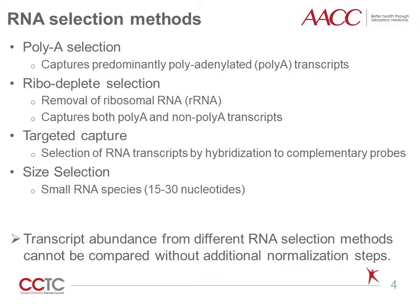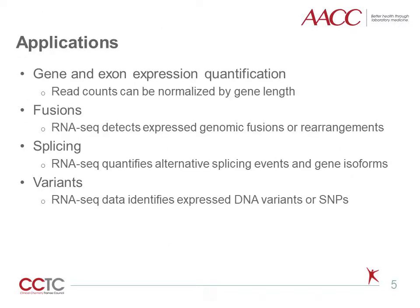Because all of these methods sequence different RNA species from the cell, RNA-Seq data from different methods cannot be directly compared without additional normalization steps. There are four main clinical applications for RNA sequencing. Gene and exon expression quantification can identify aberrant expression of clinically relevant genes. Gene fusion detection can identify diagnostic fusions. Detection of unusual splice isoforms can identify novel or disease-relevant splicing events. Calling variants using RNA-Seq can identify variants which are expressed in the RNA.